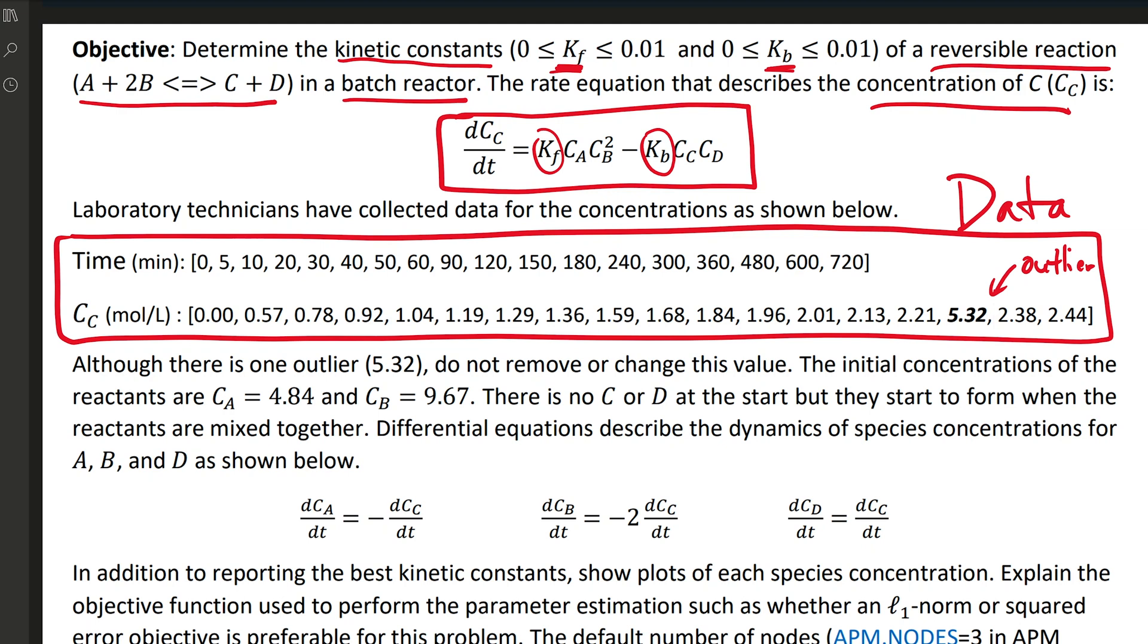But in this case, let's just say we don't remove it. How can we modify our objective function to minimize the effect of that outlier? So don't remove the outlier or change this value, go ahead and use it as is.